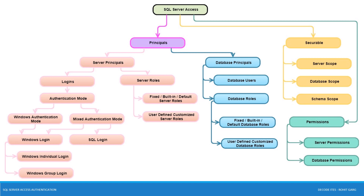Let's move to the next server principle: Server Roles. Server roles are security principles by which we can grant server-level permissions to logins. Server roles are of two types: fixed and user-defined. Microsoft provides nine fixed roles that can be used while granting permissions to logins — these are also called default or built-in server roles. The second type is user-defined roles, also known as customized server roles. In case the nine fixed roles are not sufficient for your environment's requirement, you can create your own server role with customized permissions.